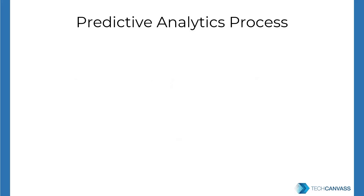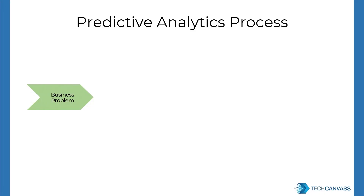Let us now look at how predictive analytics is implemented in the industry. The first thing to understand is the business problem you want to solve: what do you want to predict, what will you do with the predictions, what decisions will be driven by the insights, and what actions will be taken? Once the business goal is clear, the next step is to source appropriate data — understanding whether data is available or needs to be generated, what sources to consider, and how to store them.